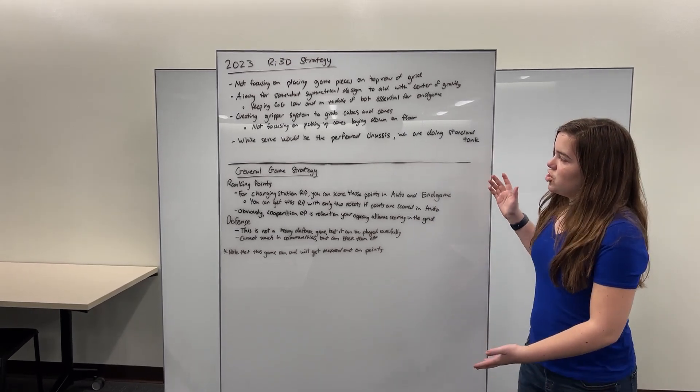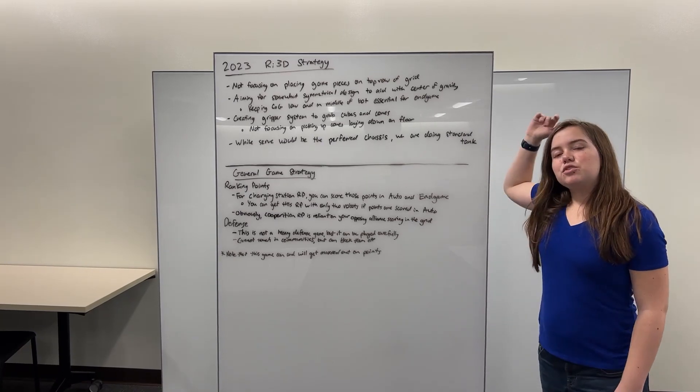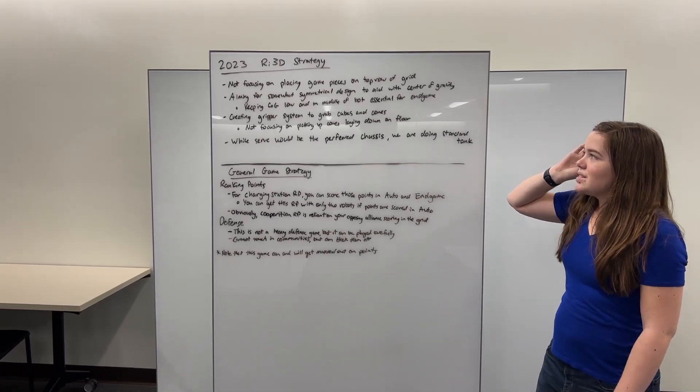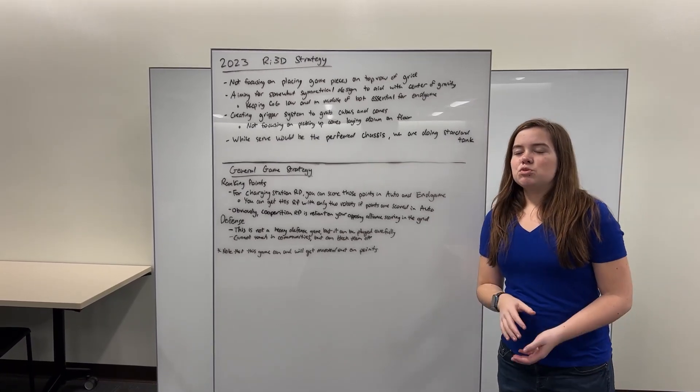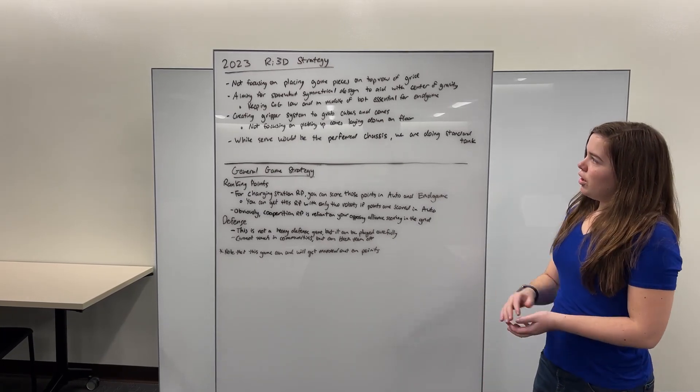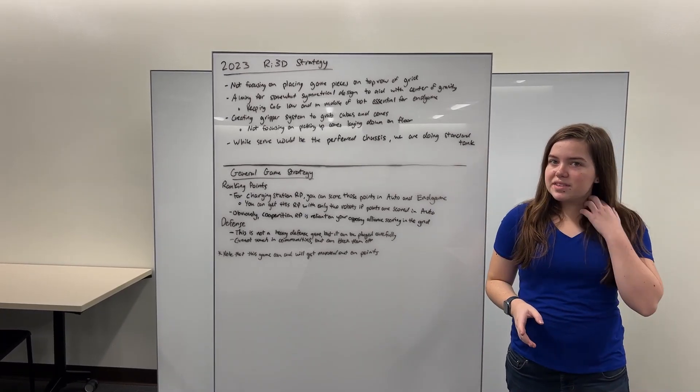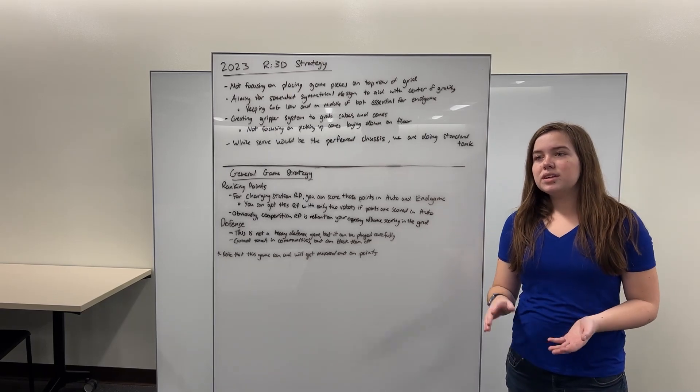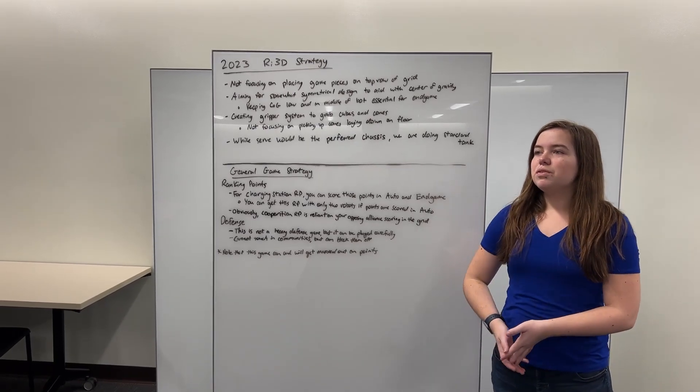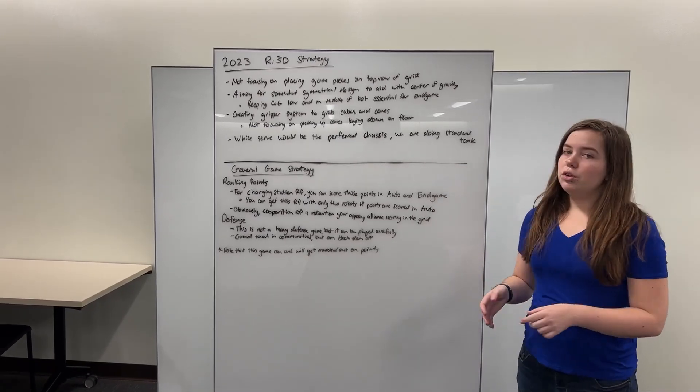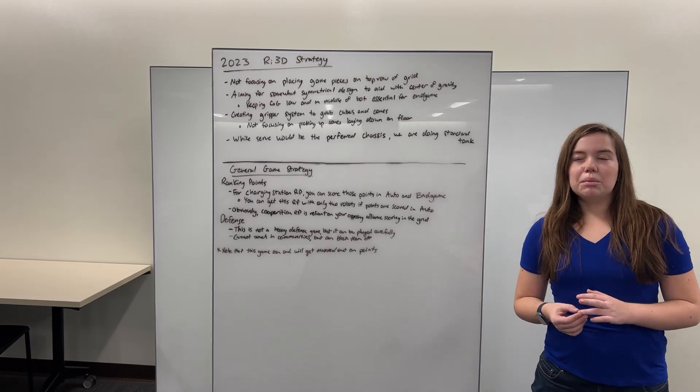So that is our basic general game strategy, and now moving on to our own strategy for Robot 3 Days. We have some basic ideas we're working with right now. So to start off, we are not focusing on placing game pieces into the top level of the grid because we feel like that would be a bit too difficult in the limited time frame we have, although it is definitely possible.